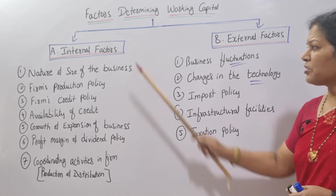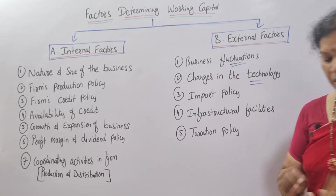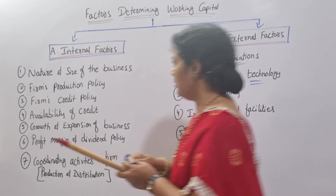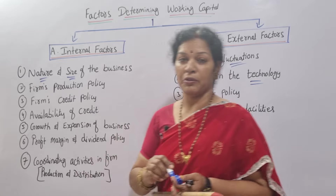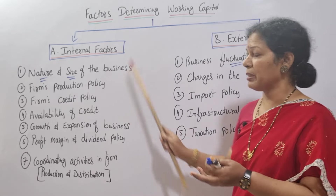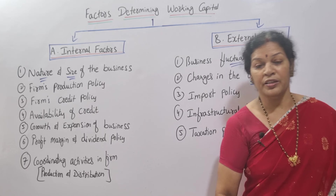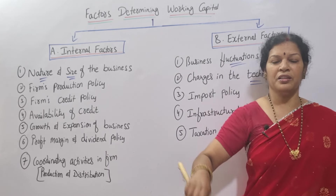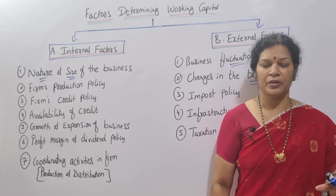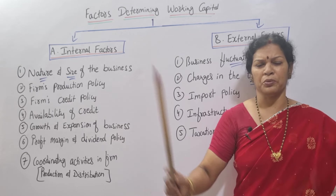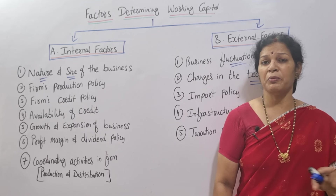Among the internal factors, the first is the nature and size of the company. The nature and size of the company determine how much working capital you need. The production cycle also plays a role — a quick production cycle affects working capital requirements.